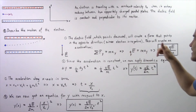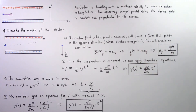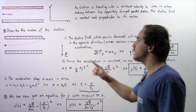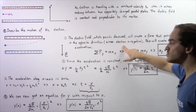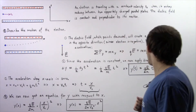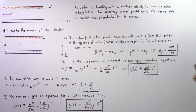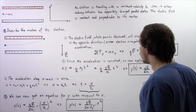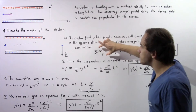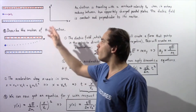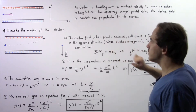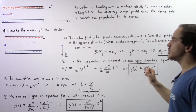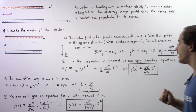The electric field, which points downward, will create a force that points in the opposite direction — upward — because we're dealing with an electron which has a negative charge. This will create an acceleration that also points upward. By Newton's second law of motion, the sum of the forces acting on our electron along the y-axis is equal to the mass of the electron multiplied by the acceleration along the y-axis.